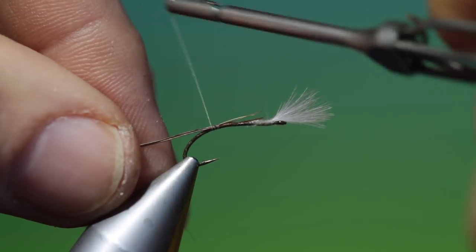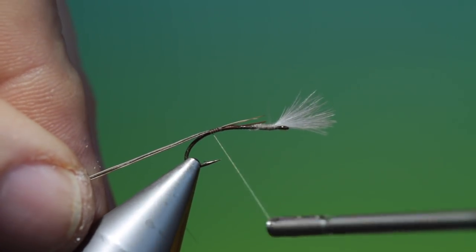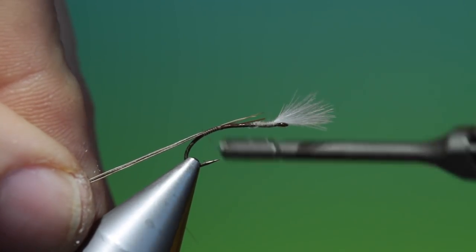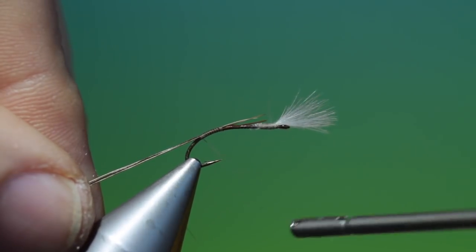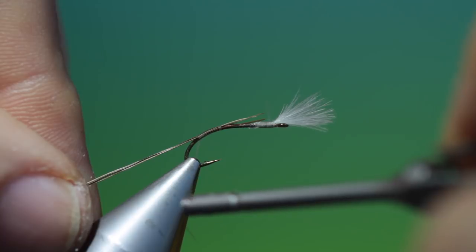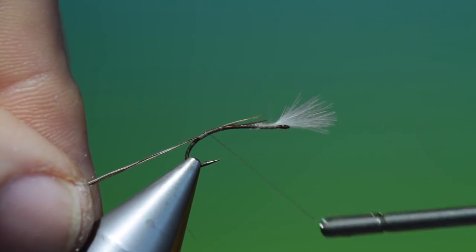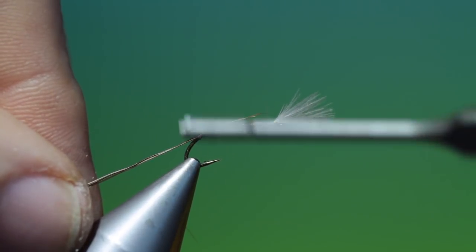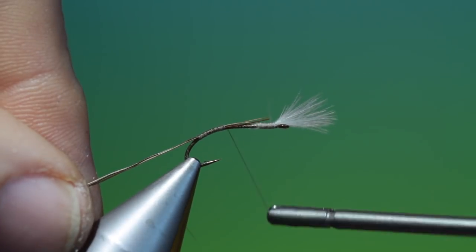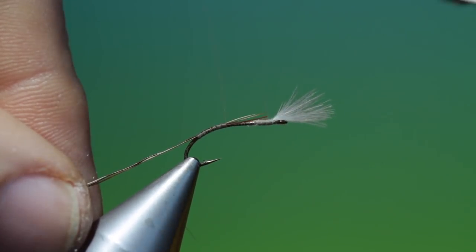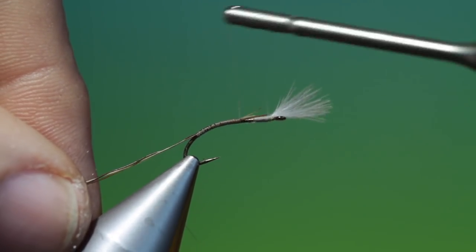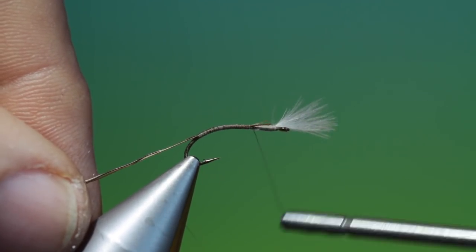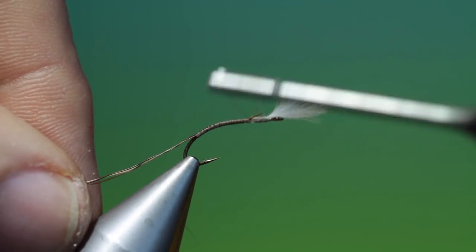We can go down. We want a very slender body on this, with this ever so slight taper. Make the body as long as you wish. And go back up towards the thorax, over the moose hair.